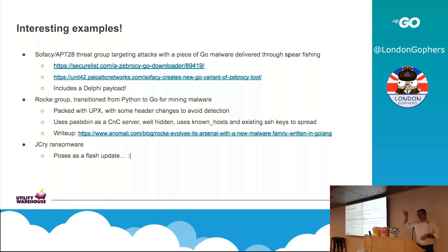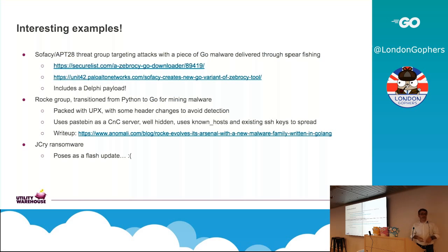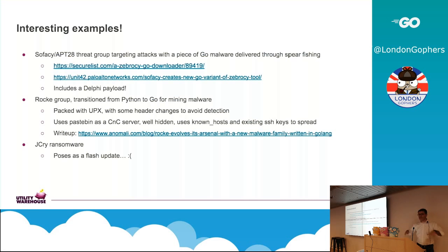Rock Group is a broader-based example — they do mining malware. The packing was interesting on this one: Go binaries are quite big, so the idea is to get them down as small as possible. There's some quite good work around reconstructing metadata to get an idea of what it does, and you can get them reasonably small — 3 meg is small now. The Rock Group sample was interesting because it was packed with UPX, but they changed the UPX header to read 'LSD' and then had this really cool hippie-themed malware throughout. At least it was entertaining to look at.